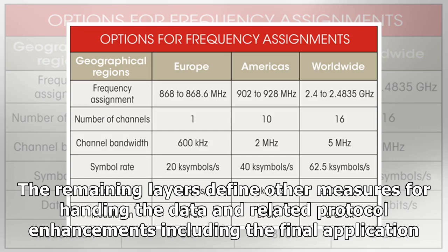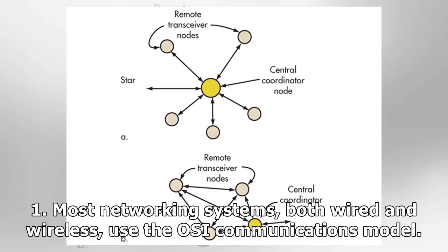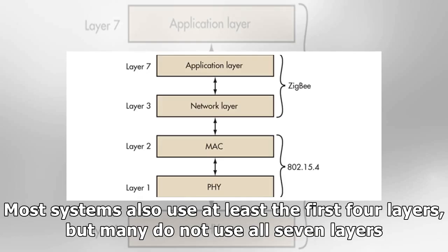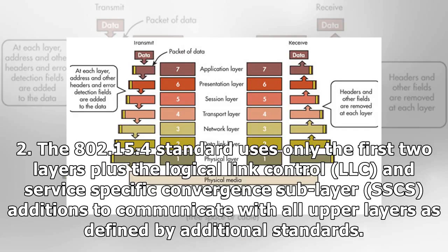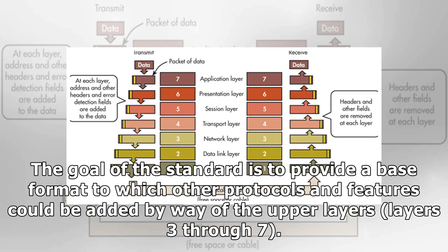The remaining layers define other measures for handling the data and related protocol enhancements, including the final application layer. Most networking systems, both wired and wireless, use the OSI communications model and at least the first four layers, but many do not use all seven layers. The 802.15.4 standard uses only the first two layers, plus the logical link control (LLC) and service-specific convergence sublayer (SSCS) additions, to communicate with all upper layers as defined by additional standards. The goal is to provide a base format to which other protocols and features can be added via layers three through seven.